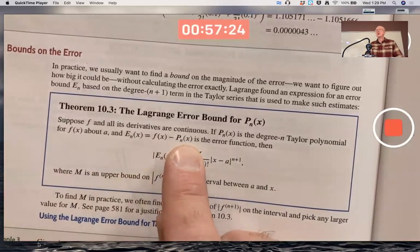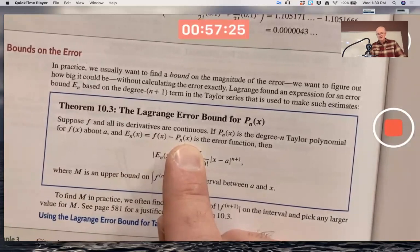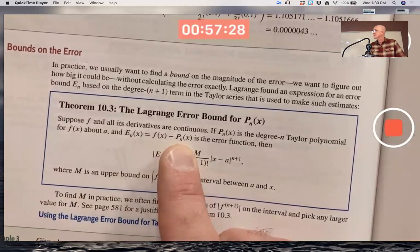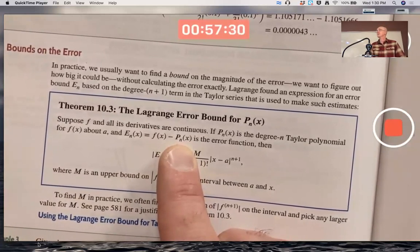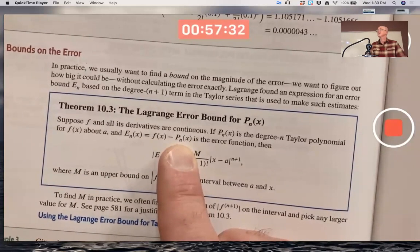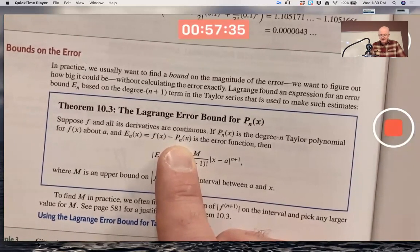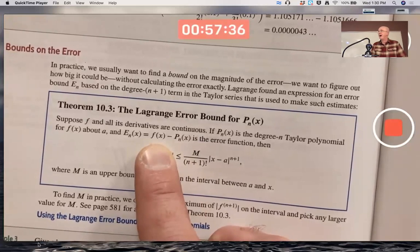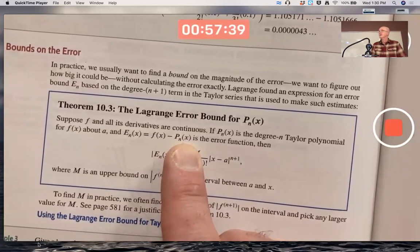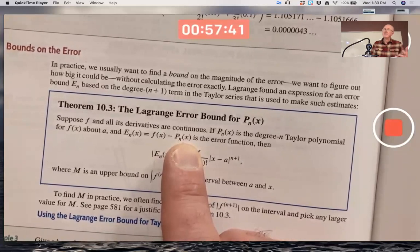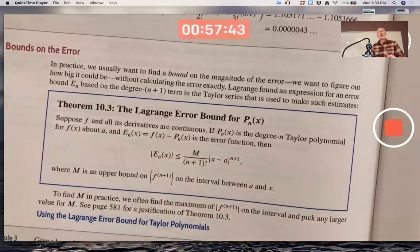In fact, if p_n of x is too big, if it's an overestimate, then this difference is going to be negative. Overestimates generate what are called negative errors. And if p_n of x is too small in approximating f of x, then this is going to be positive. Estimates that are too small generate positive errors. It's a little weird, but that's the way it's standard.